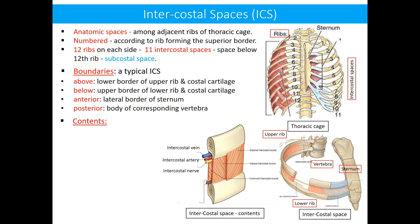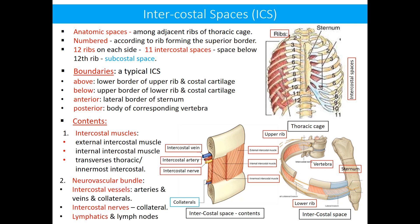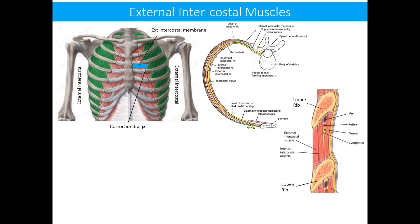As regards the contents of the intercostal space, they are: number one, intercostal muscles — that is external, internal, and innermost intercostal muscles; number two, neurovascular bundle comprising intercostal vessels (arteries and veins) and their collaterals, intercostal nerves and their collaterals; and lastly, lymphatics and lymph nodes. Now we start with the intercostal muscles.